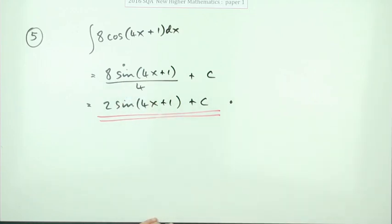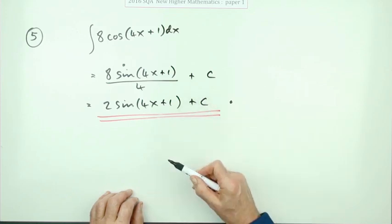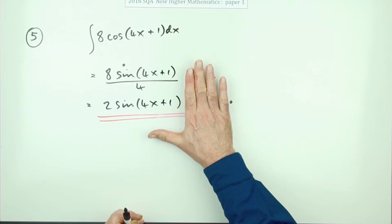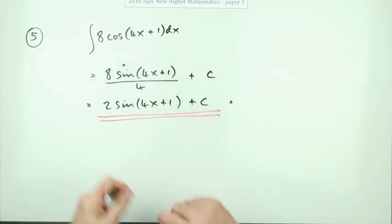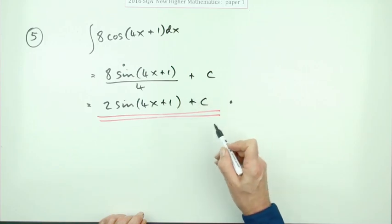That would be the second mark. What I can't see is what would happen if you didn't put in the plus C. I don't see a mention of what would happen if you left it like that, for instance, because of course there would have been some constant number which would have disappeared when you differentiated it to go back. I think you should just take it as if you forget that plus C, you wouldn't get the second mark.